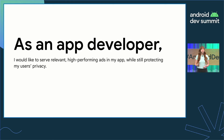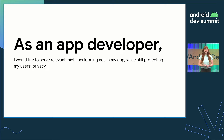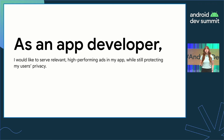These APIs allow you to monetize your app with relevant and high-performing ads while still protecting the privacy of your users. App developers can typically work with their advertising SDK partners to integrate the Privacy Sandbox.